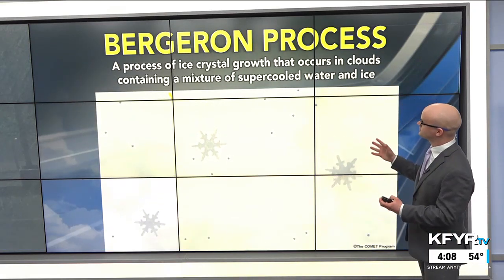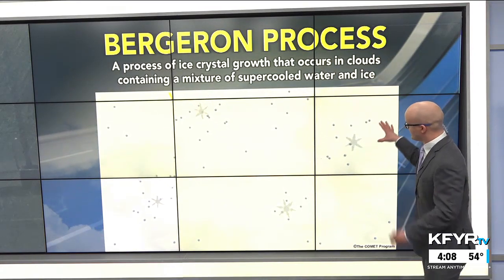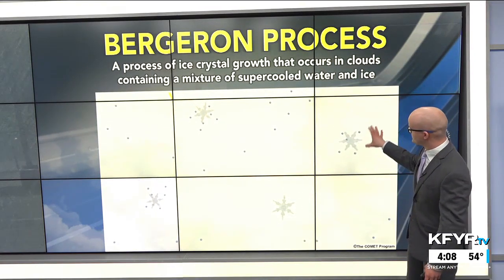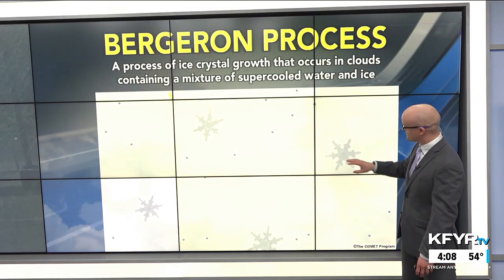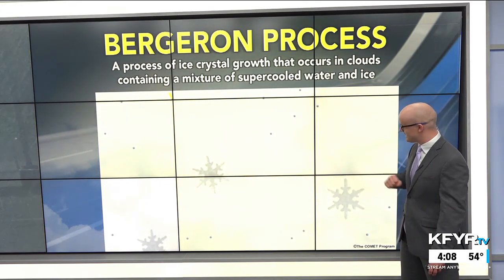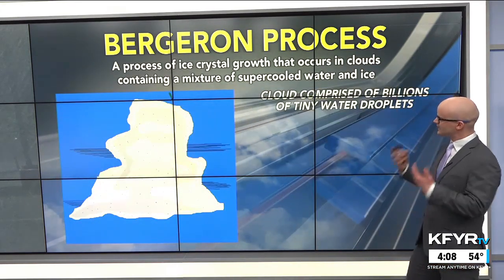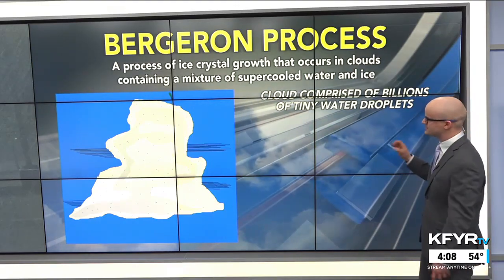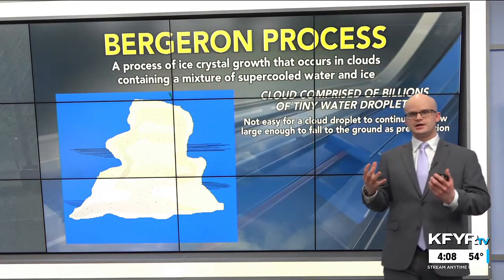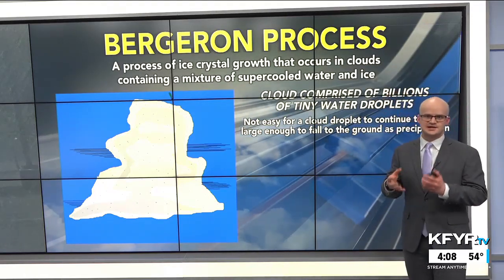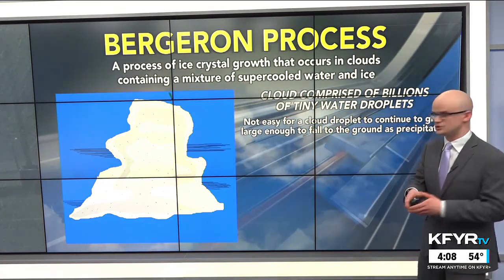The Bergeron process is a process of ice crystal growth that occurs in clouds containing a mixture of supercooled water droplets and ice. You can see how these water droplets add to these ice crystals, and we can get these snowflakes to form. The cloud is comprised of billions of tiny water droplets, and within this cloud, we need those droplets to grow bigger to form precipitation. They need to aggregate onto these snow crystals in order to form large enough snowflakes to fall to the ground.